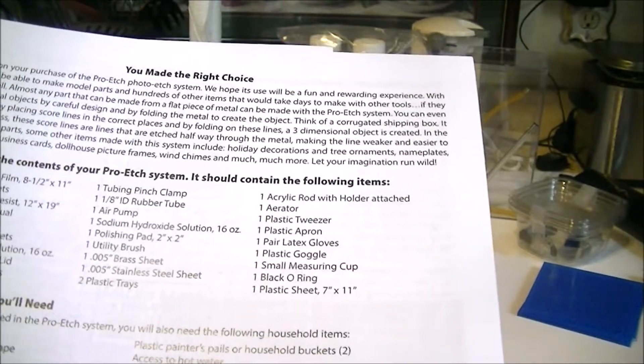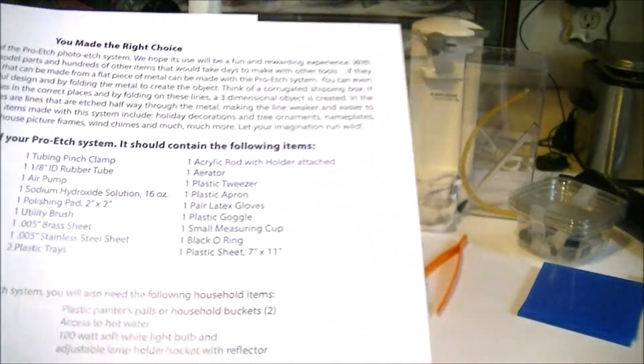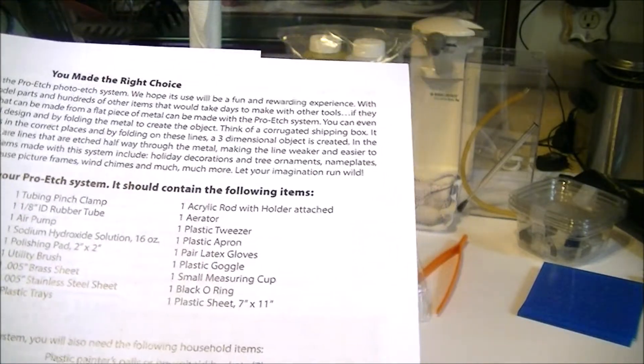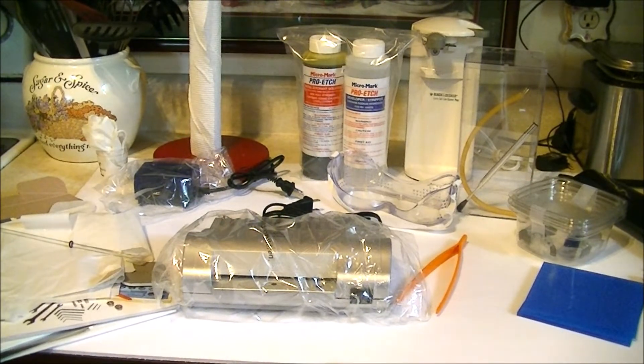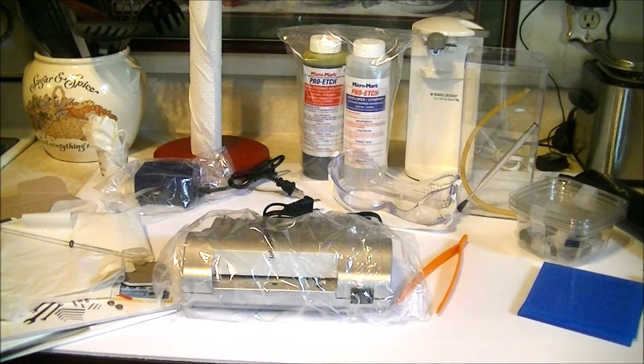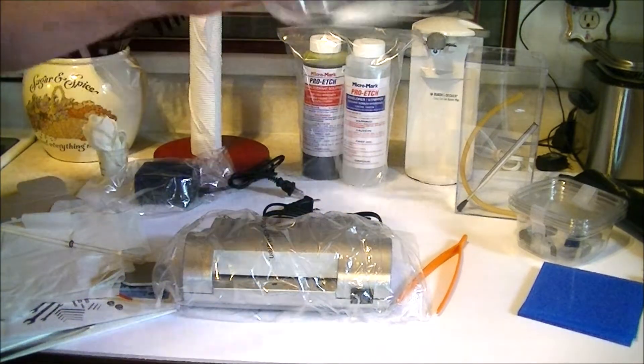Five thousandths brass sheet, five thousandths stainless steel sheet, plastic trays, one acrylic rod with holder attached, an aerator, plastic tweezer, plastic apron, pair of latex gloves, plastic goggles, small measuring cup, black O-ring, plastic sheet seven by eleven. That is a lot to stuff into one kit considering the price you pay.